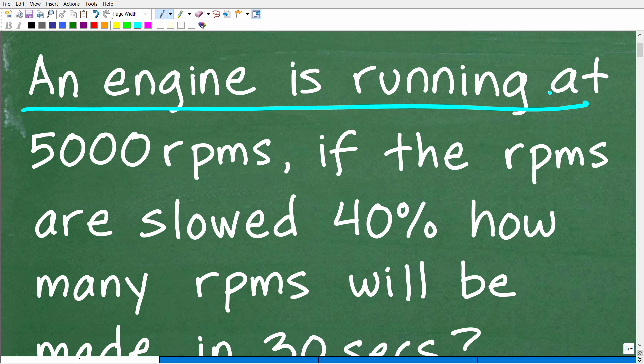An engine is running at 5,000 RPMs. Let me go ahead and just clarify this right here, just in case some of you out there don't know what an RPM is. Okay, so RPMs is an acronym. It stands for revolutions per minute.